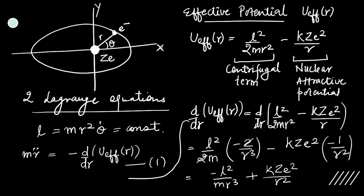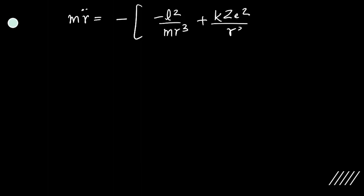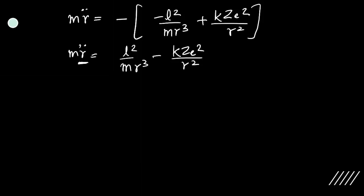Substituting into the equation of motion, mR̈ equals minus the expression: -L²/(mR³) + KZe²/R². Taking the negative sign in, we get mR̈ = -L²/(mR³) + KZe²/R².